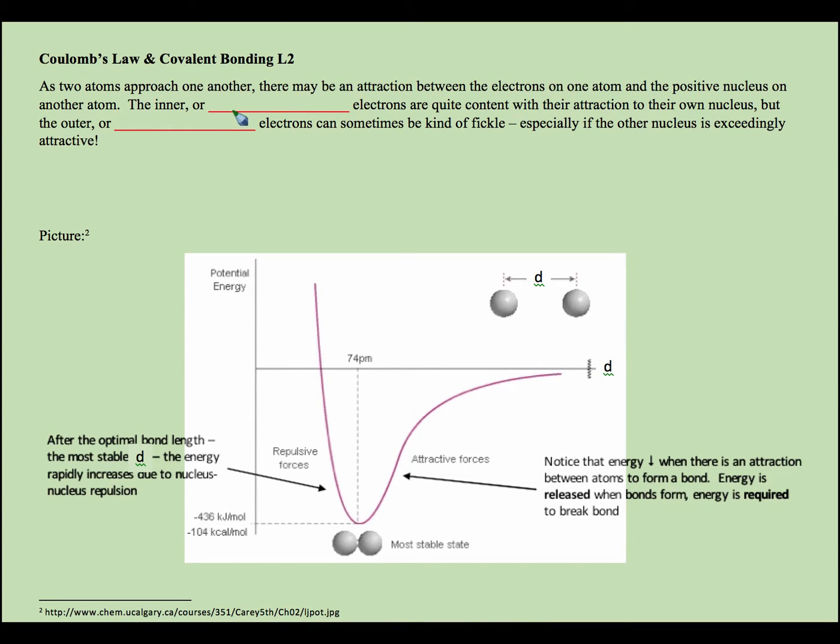Coulomb's Law is about attraction or possibly repulsive forces. Repulsive forces would go up like that. As two atoms come close together, their inner or core electrons really have no impact on this conversation, but as they come close together, their valence electrons start to interact. Ionic, there's a transfer of those valence electrons. With covalent, what we're talking about is a sharing situation.